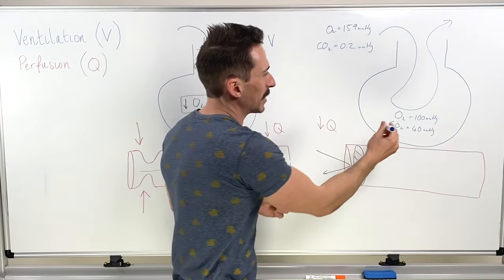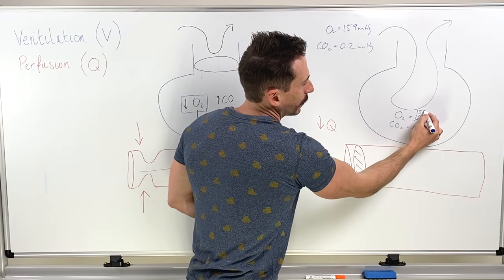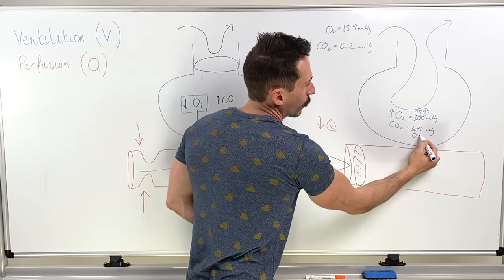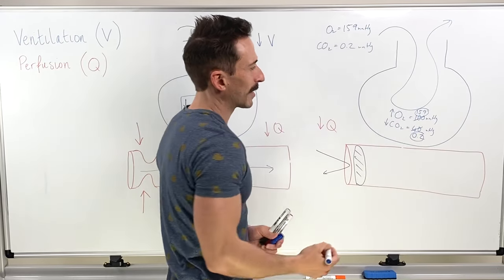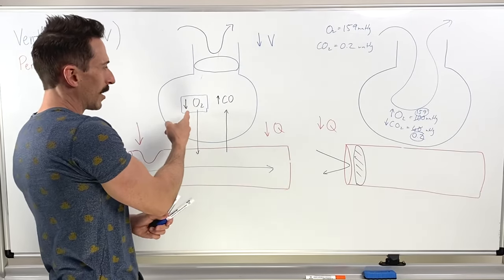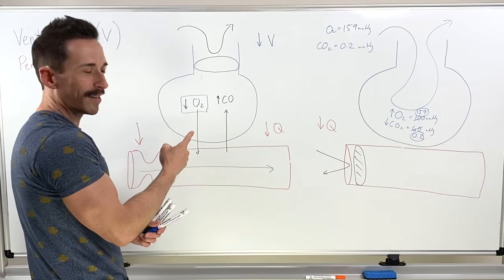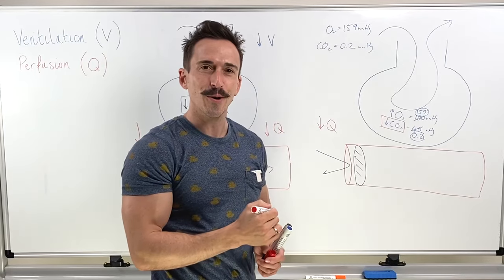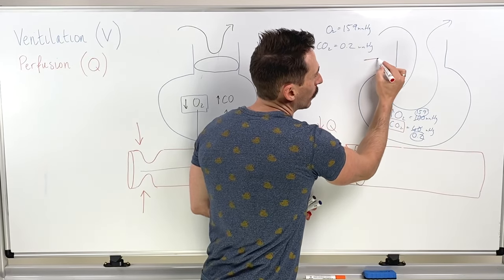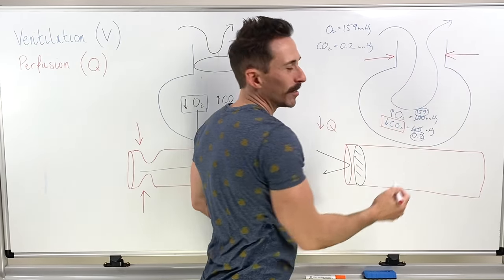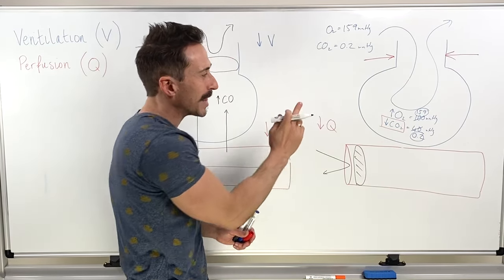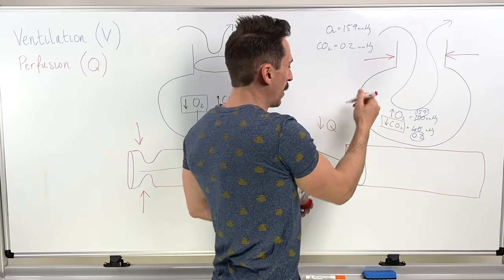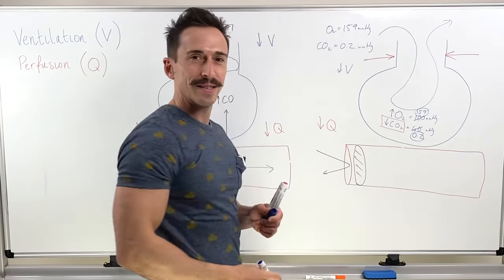Oxygen goes from 100 to 159 — so oxygen goes up. Carbon dioxide goes from 40 to 0.2 — so carbon dioxide levels go down. Compare that to the blocked alveolus scenario; it's the opposite. In this case, the drop in CO2 is the trigger to tell the bronchioles to constrict. The stimulus was a drop in perfusion, which led to a drop in carbon dioxide, which led to bronchial constriction, meaning ventilation drops. You get a drop in perfusion resulting in a drop in ventilation — it now matches.